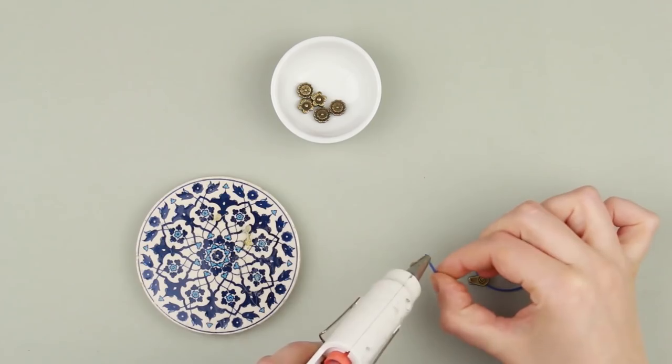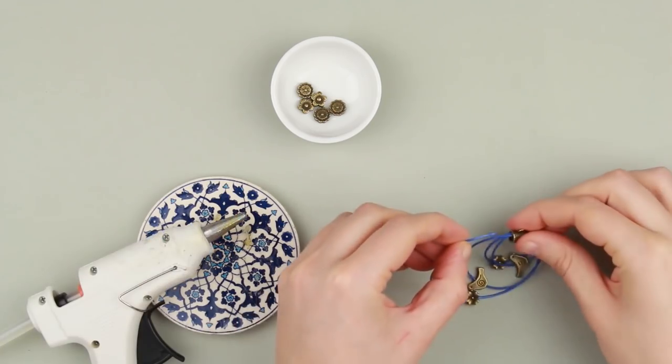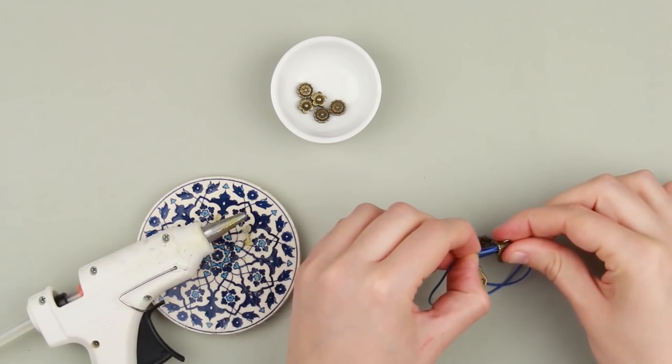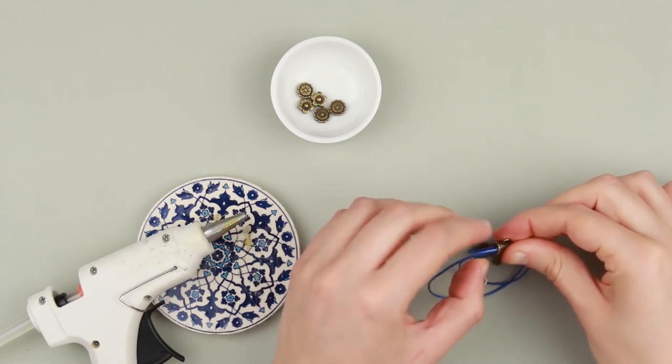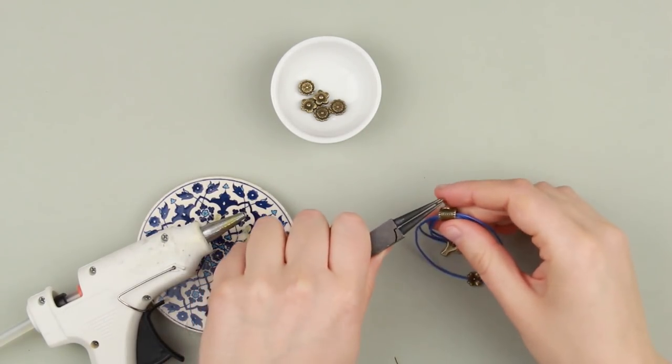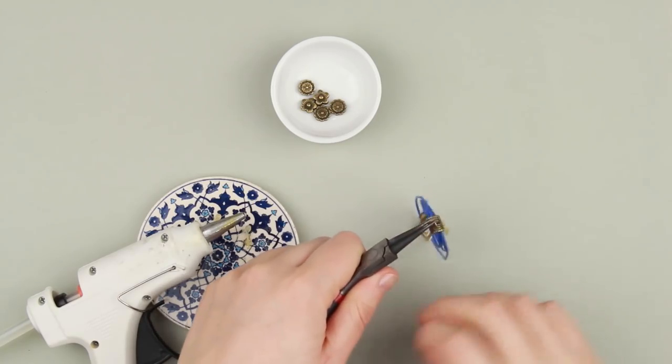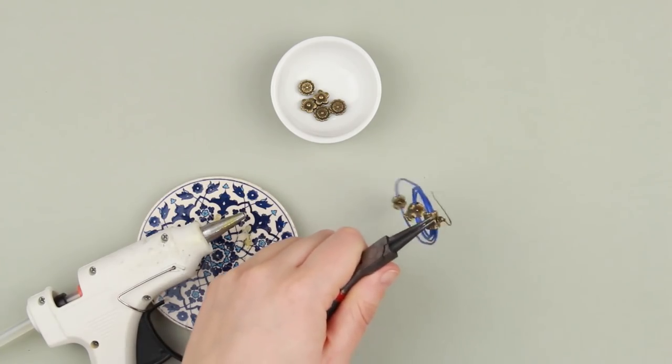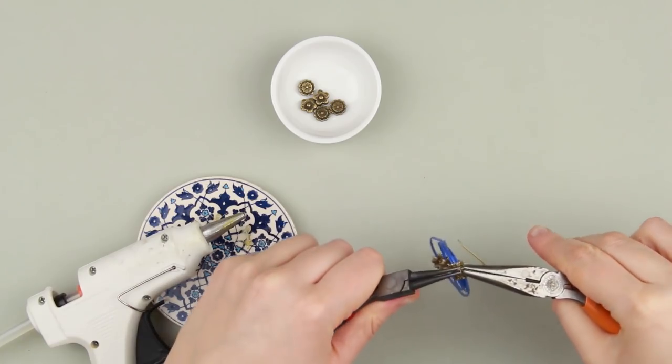Hot glue the cord end. Put it into the tube connector and press over. You only need to set the French hook. Open a jump ring and pass it through the loop on the connector. Put on the hook. Close the ring.